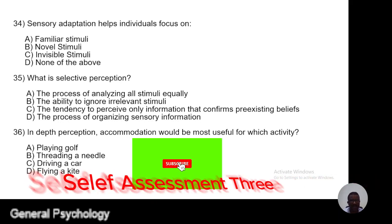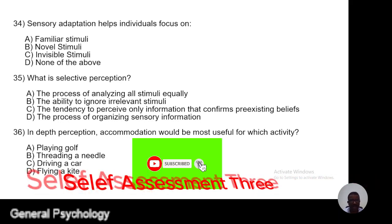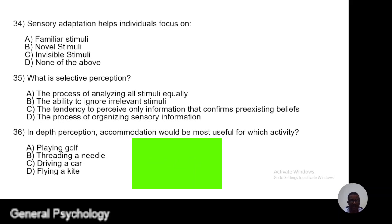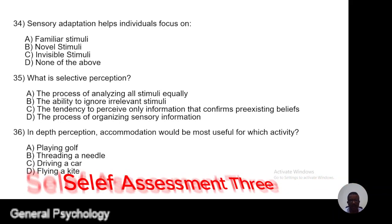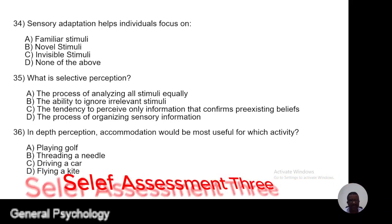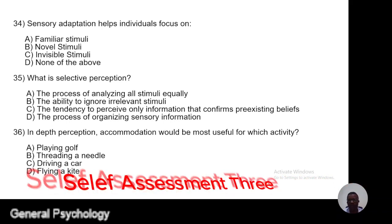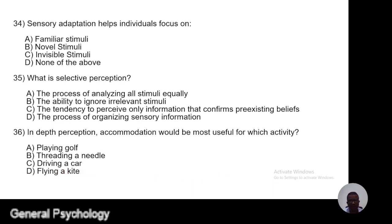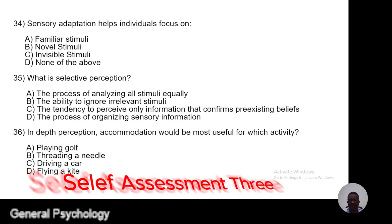Question 35. What is selective perception? A, it is a process of analyzing all stimuli equally; B, it is the ability to ignore irrelevant stimuli; C, it is a tendency to perceive new information that conforms to pre-existing beliefs; D, it is the process of organizing sensory information.